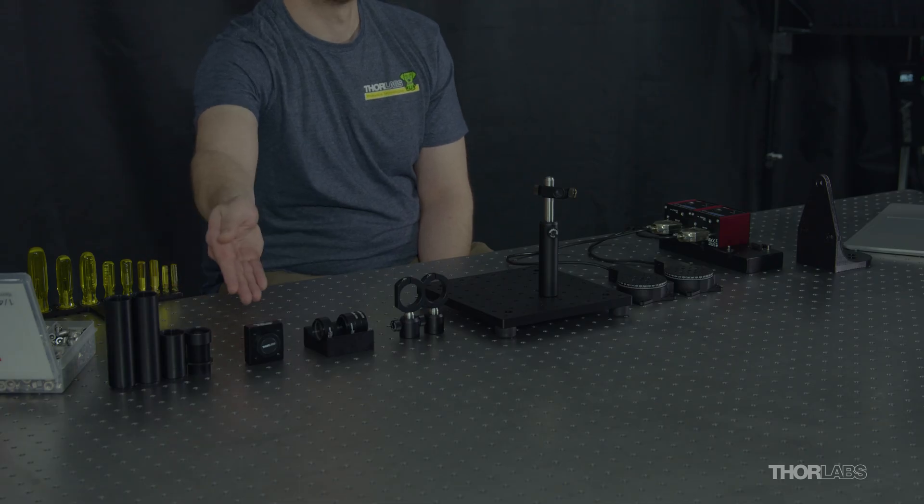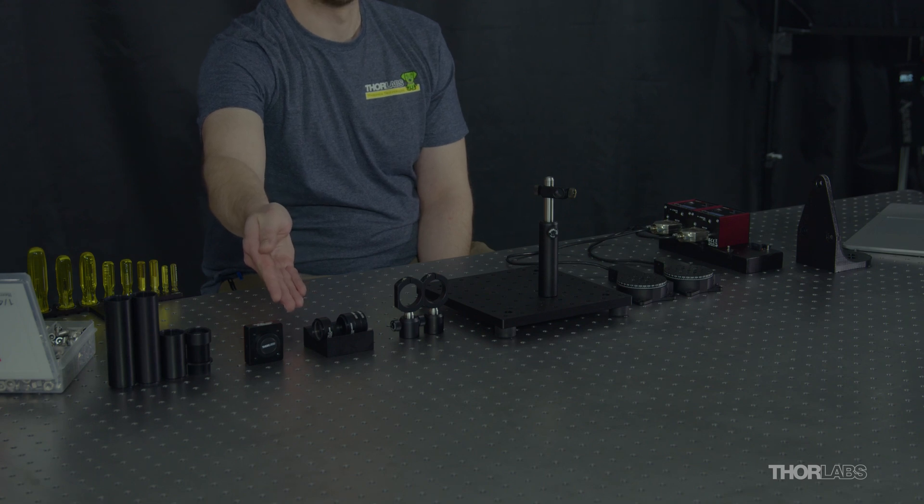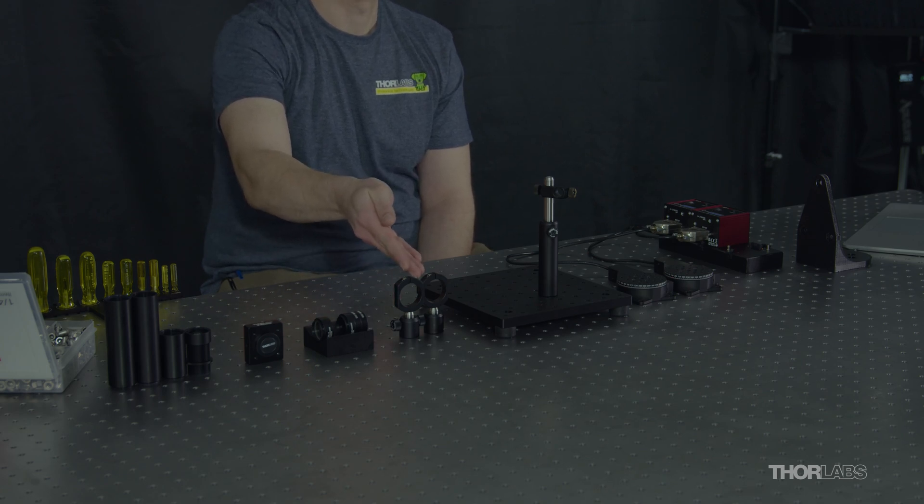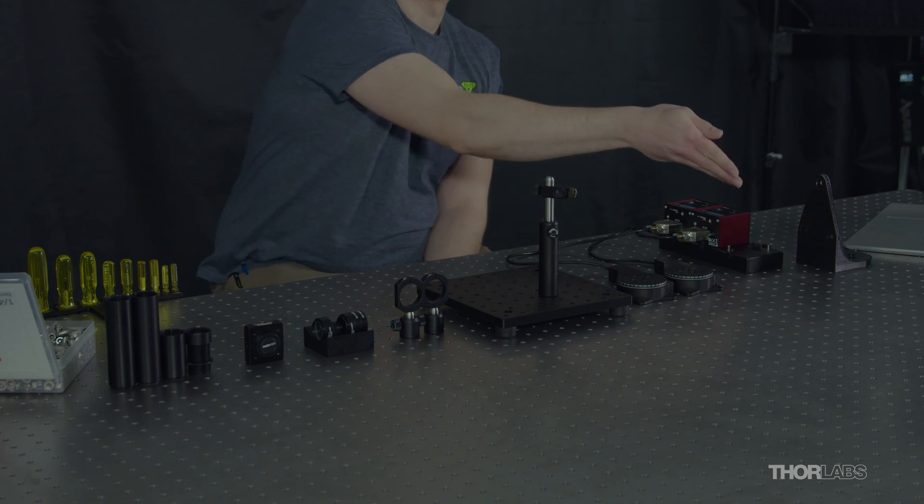To demonstrate this, I'll be using lens tubes, a monochrome camera, an achromatic doublet imaging lens, neutral density filters, lens tube clamps, a small breadboard, motorized rotation stages, and an adapter bracket.